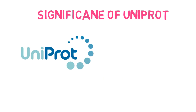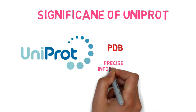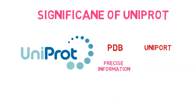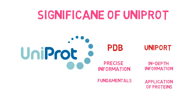This database is the most crucial because it contains all the protein details submitted to the other databases. It could be considered the protein data bank's upgraded version. While PDB offers precise information on proteins, UniProt offers comprehensive and in-depth data. The fundamentals are covered by PDB, and the applications of proteins are surrounded by UniProt. It provides both an interpretation of structures and information about how they work.